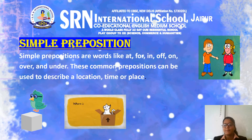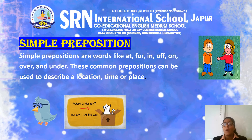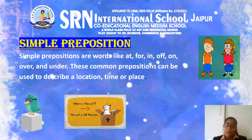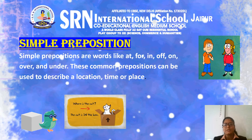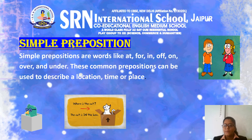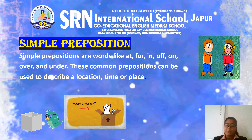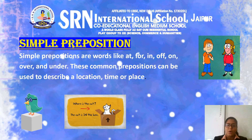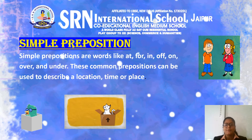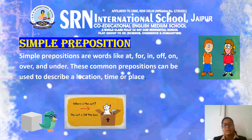First one is simple preposition. Simple prepositions are words like at, for, in, of, on, over, and under. These are common prepositions that can be used to describe a location, time, or place. Simple prepositions are short words used to determine a relationship between nouns and pronouns, or even to join parts of a clause or sentence.